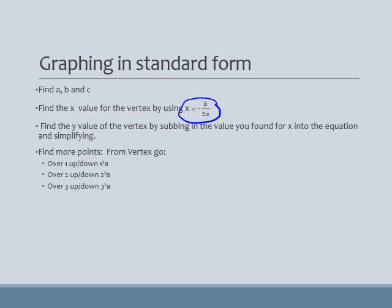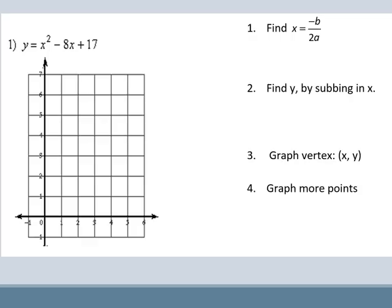And then we can just sub it in to find the y. So here's our equation. So my a, which is in front of here, is going to be 1. My b, the coefficient in front of the x, is going to be negative 8. And my c, which is my y-intercept, is 17. Well, it's not going to do me any good. My graph only goes to 7.